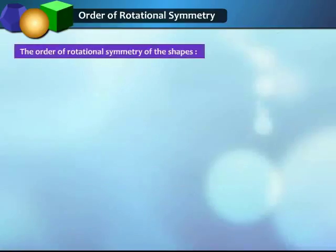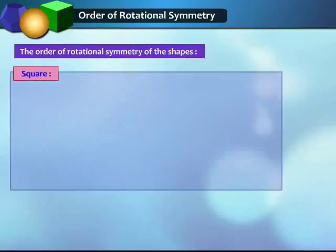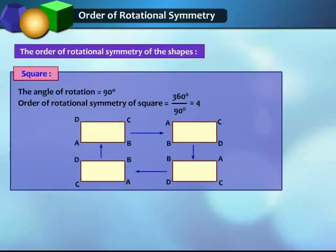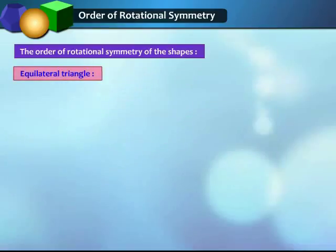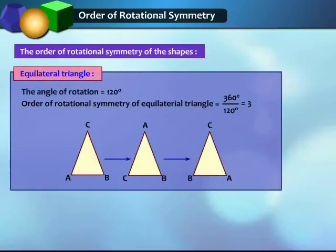Let us know the order of rotation of different shapes. First, square: the angle of rotation of a square is 90 degrees, so the order of rotational symmetry will be 360 degrees divided by 90 degrees, which equals 4. Second, equilateral triangle: the angle of rotation of an equilateral triangle is 120 degrees, so the order of rotational symmetry will be 360 degrees divided by 120 degrees, which equals 3.